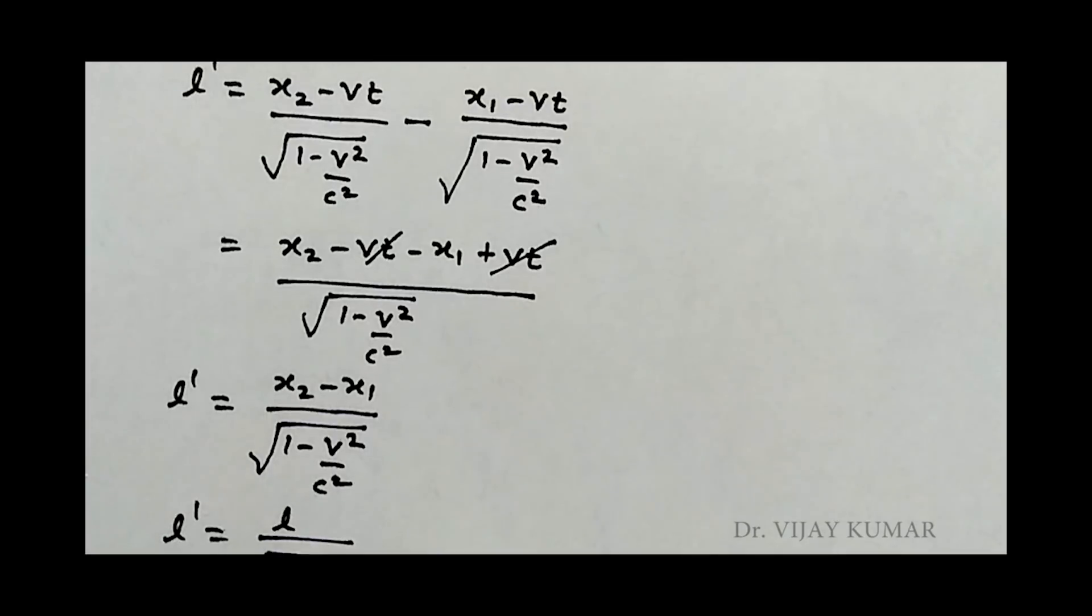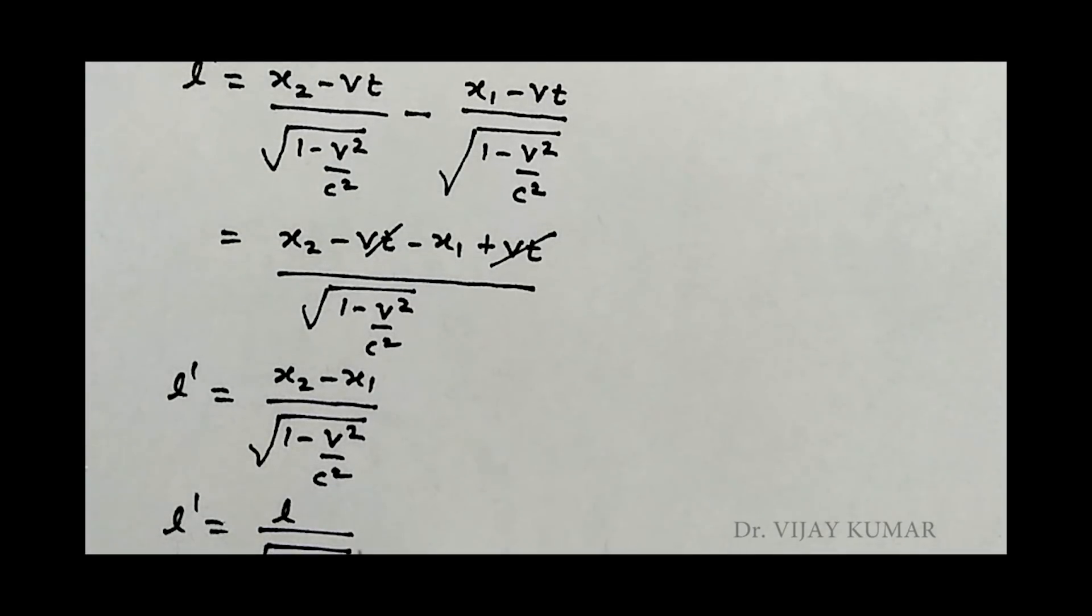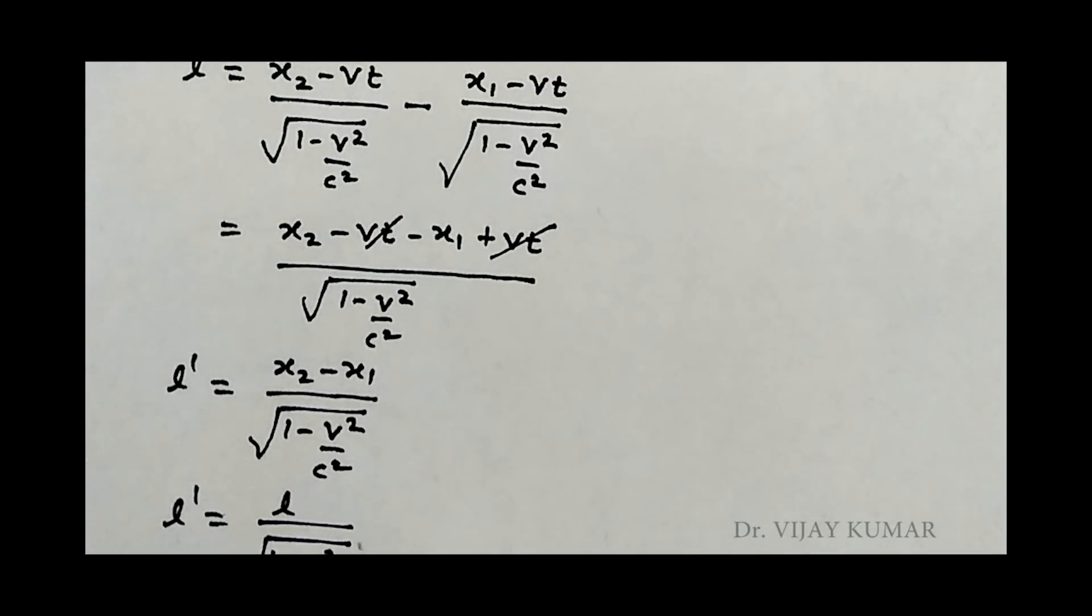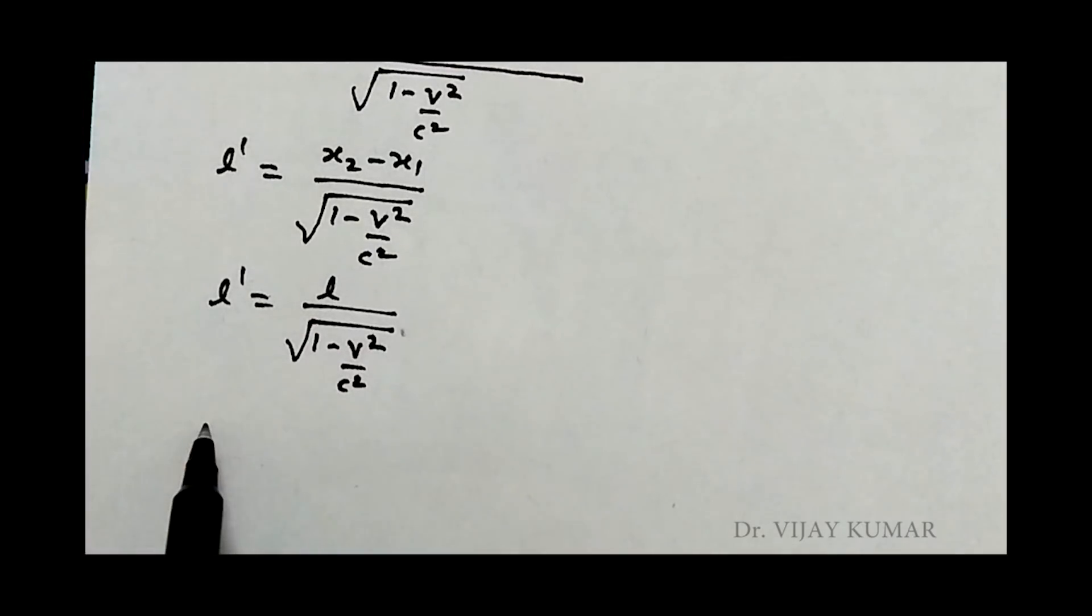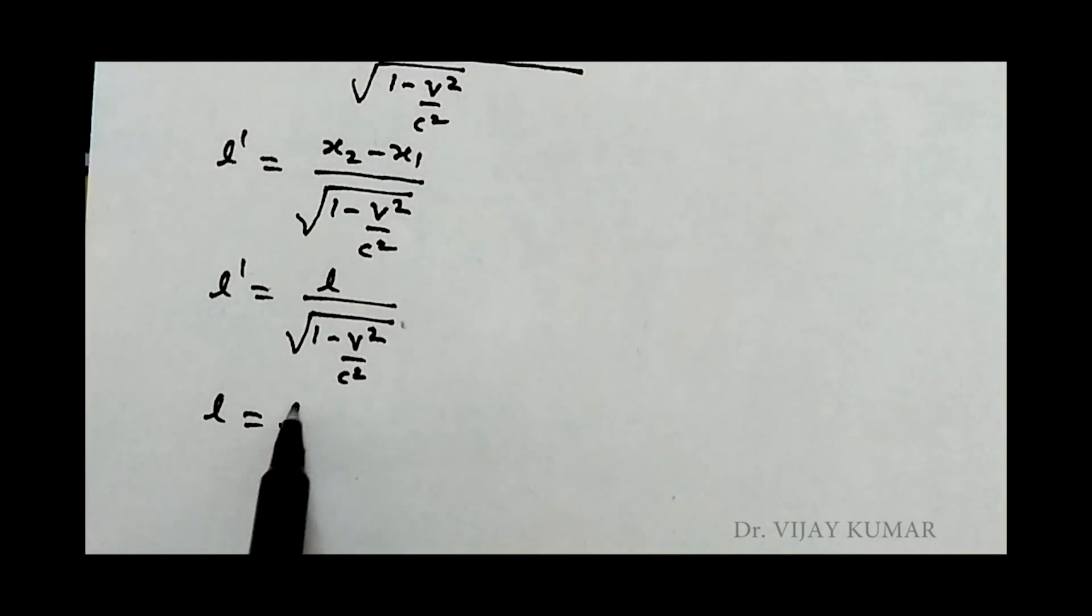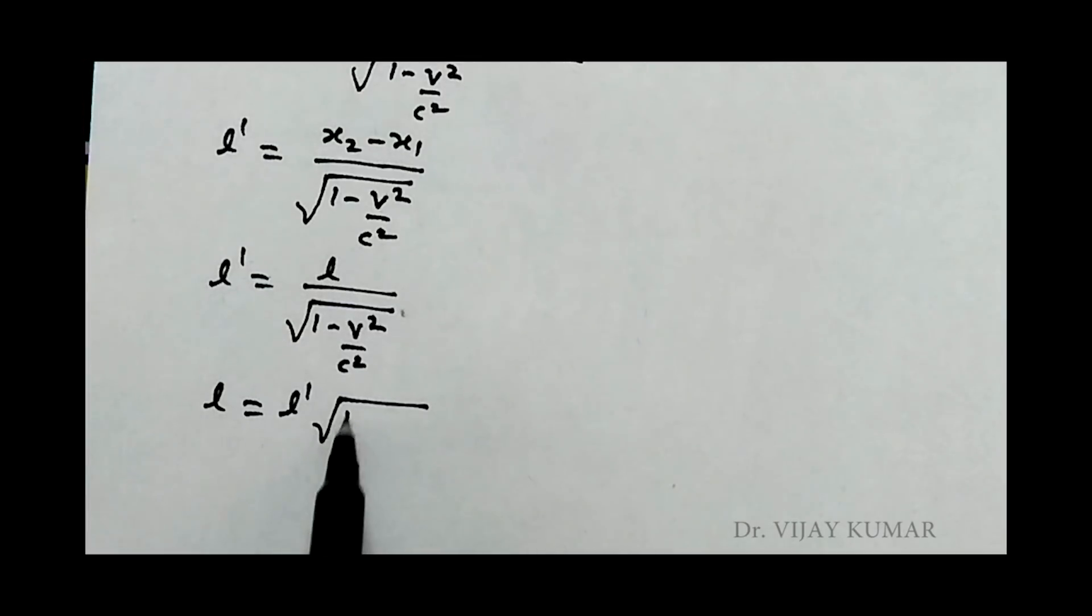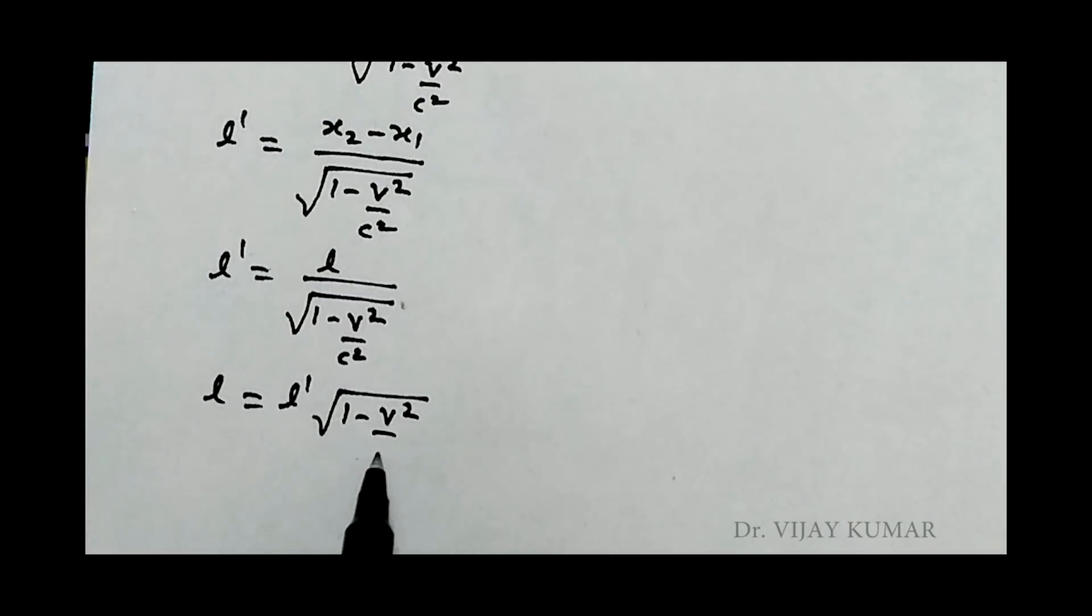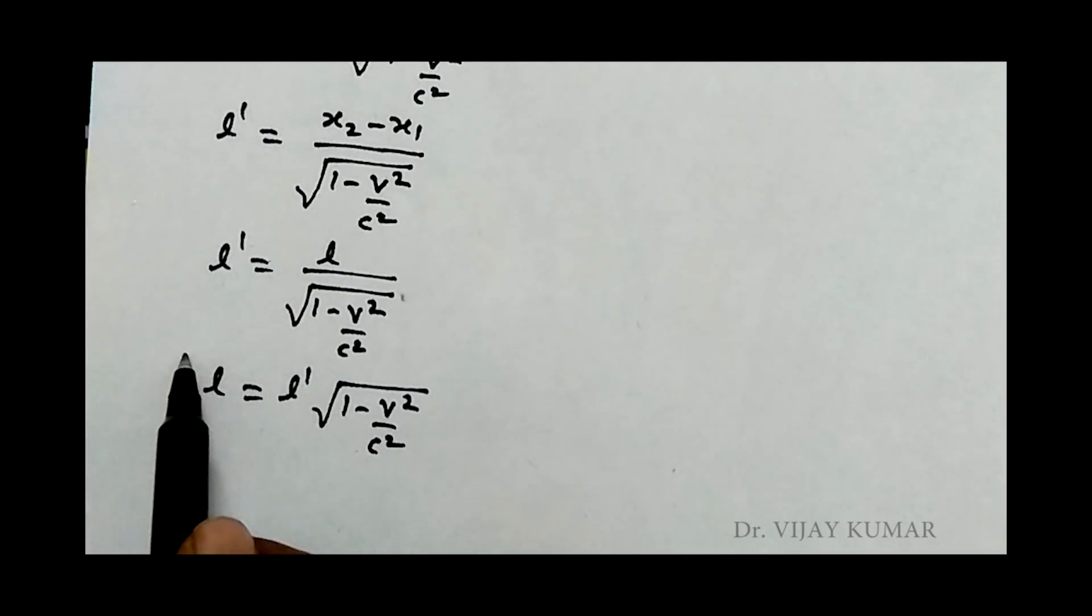Since x2 minus x1 equals L, then L' equals L upon square root of 1 minus v² upon c². We can also write L equals L' times square root of 1 minus v² upon c².